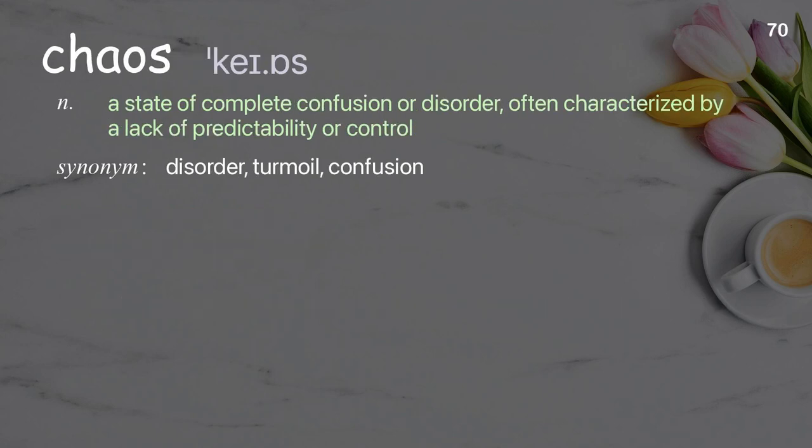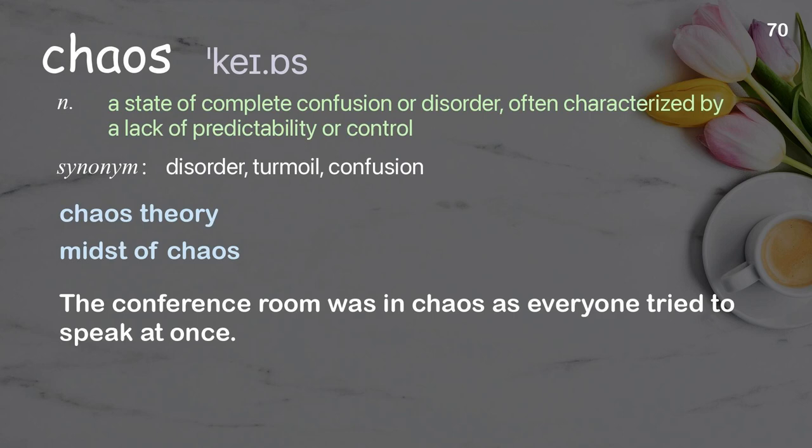Chaos: a state of complete confusion or disorder, often characterized by a lack of predictability or control. Example: the conference room was in chaos as everyone tried to speak at once.